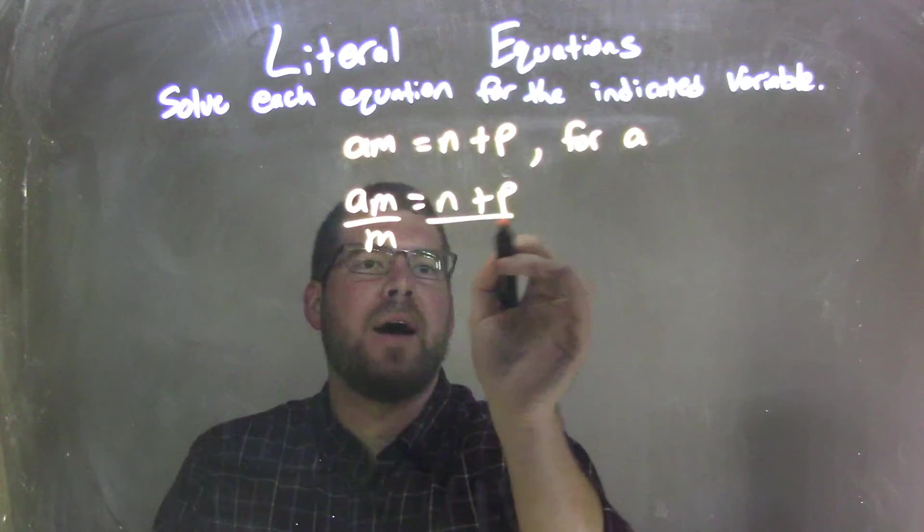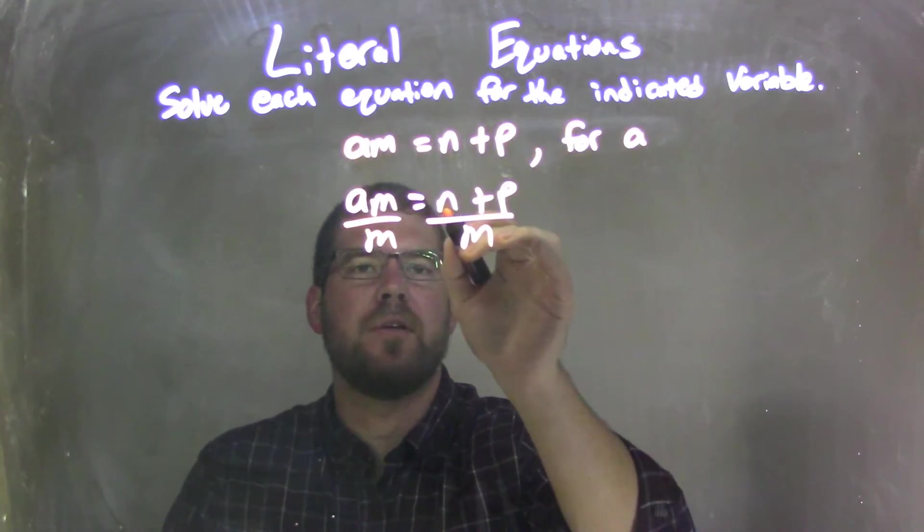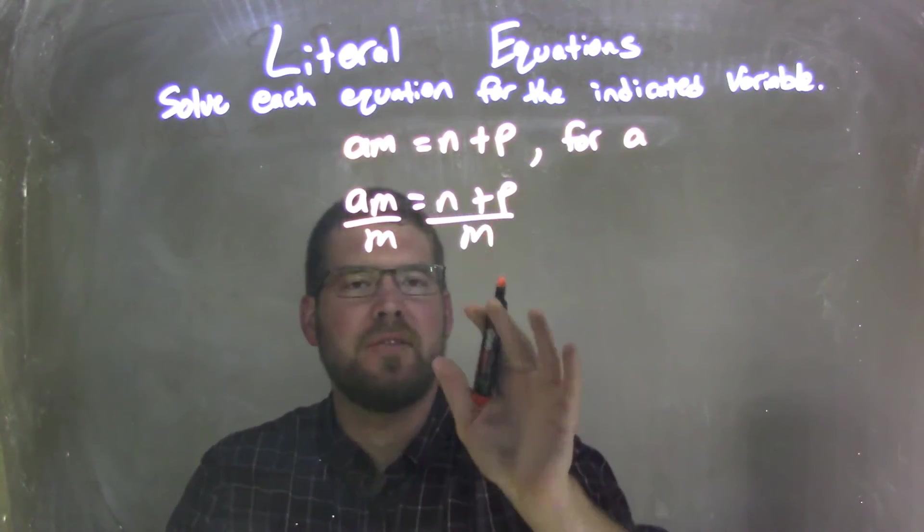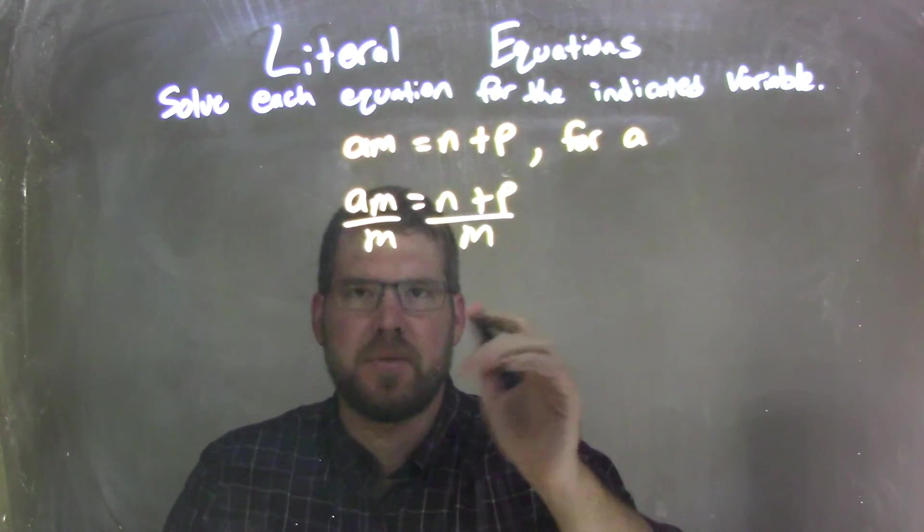So I'm going to divide both sides by m. Make sure you're dividing both parts, the whole thing, n plus the p. A lot of students I see will just bring it to the n, or just the p.